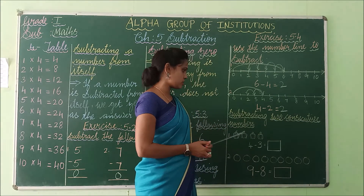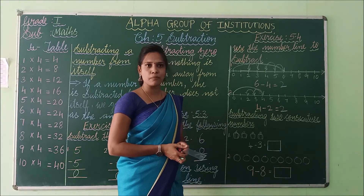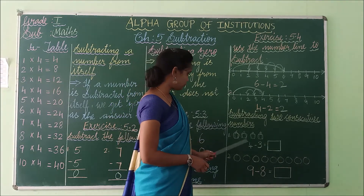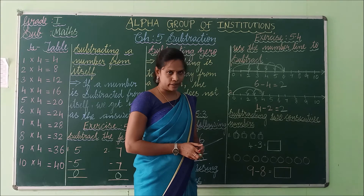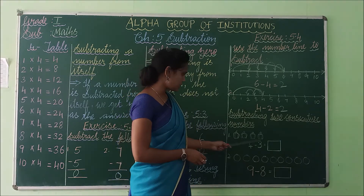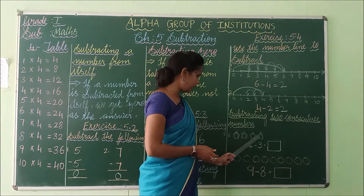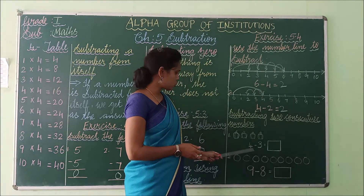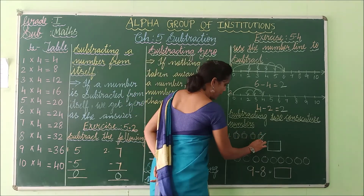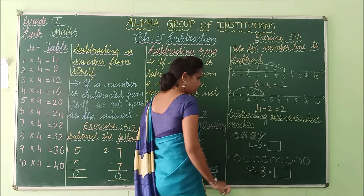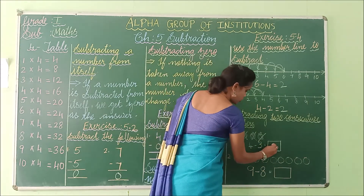Subtracting two consecutive numbers. Consecutive numbers means following the next number in the series. If you subtract any two consecutive numbers, the answer will always be 1. See the first example — there are 4 capsicums. 4 minus 3: take away 1, 2, 3 — only 1 remains. So 4 minus 3 equals 1.